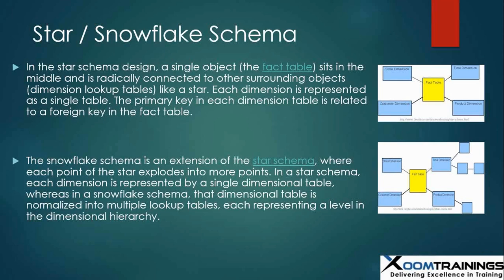Another model used in BI is the Snowflake schema. The Snowflake schema is basically an extended version of the star schema. For example, a time dimension is further denormalized into other sub-dimensions. This is the difference between star and Snowflake schema.